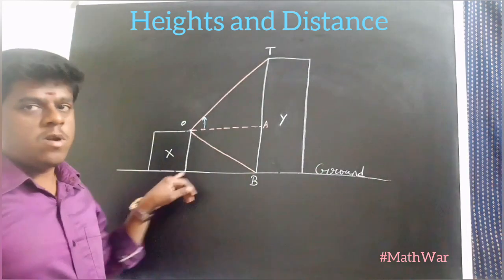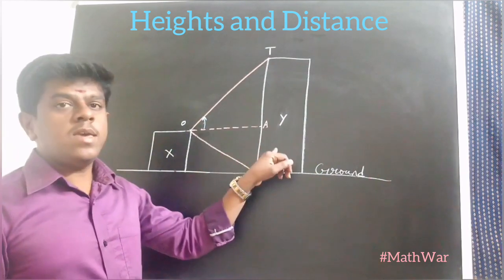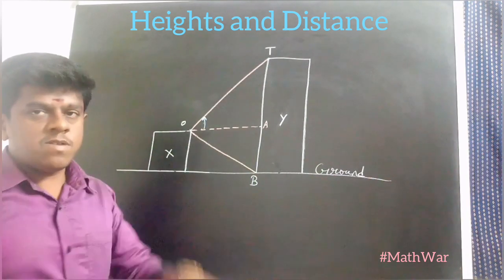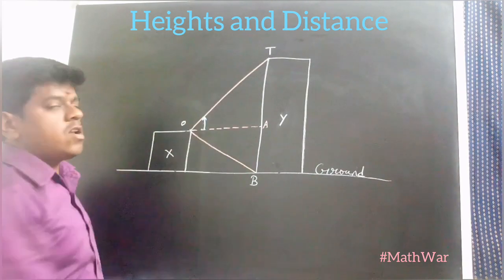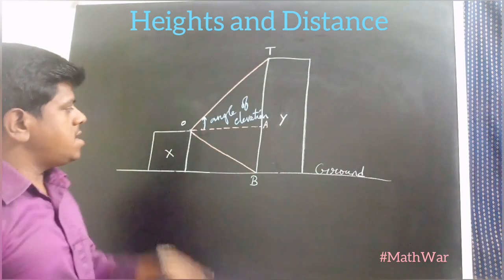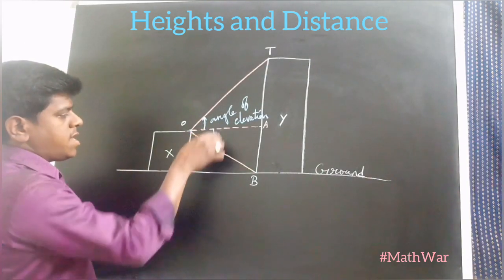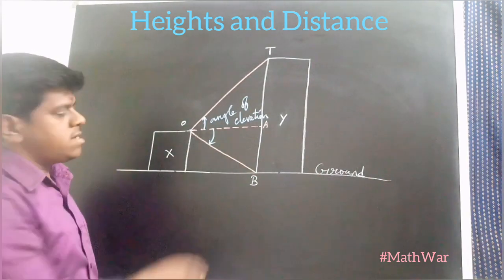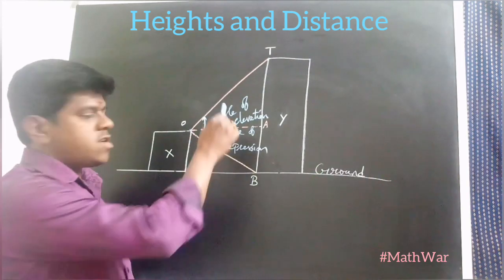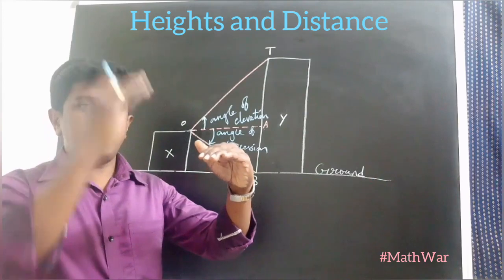Here we have two buildings X and Y — X is smaller and Y is bigger. Observer O is present at the top of building X. OA is a horizontal line from the observer's eye. If the observer sees the top of the taller building, the angle formed is the angle of elevation. If the observer looks down, the angle from the horizontal line OA to the line of sight OB is the angle of depression. It is essential to have a horizontal line before measuring elevation or depression.